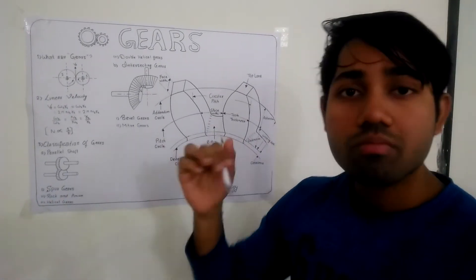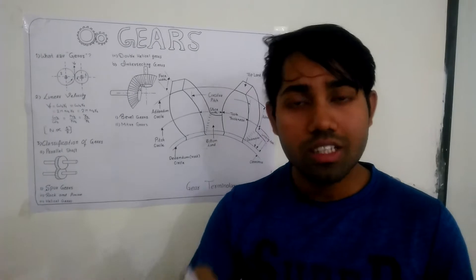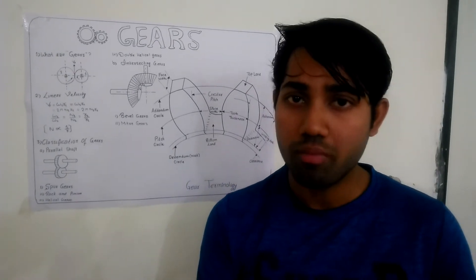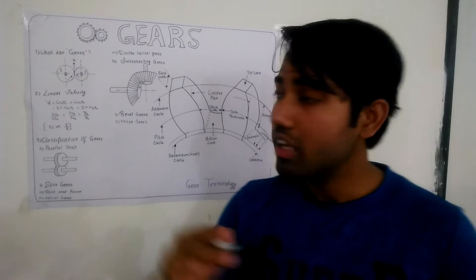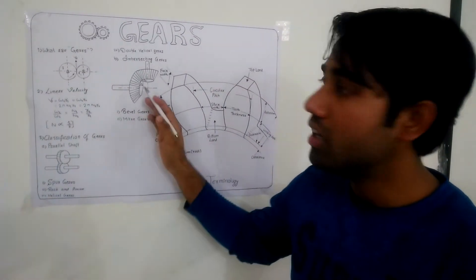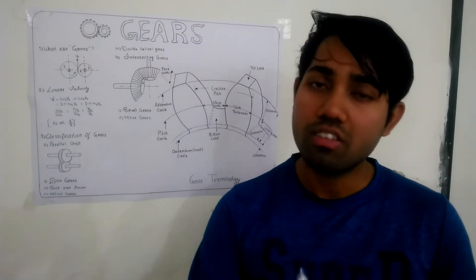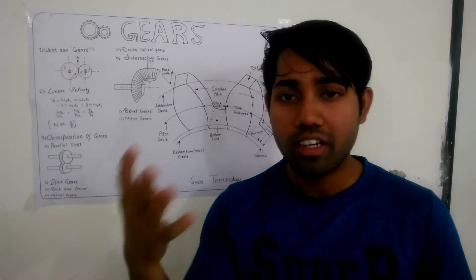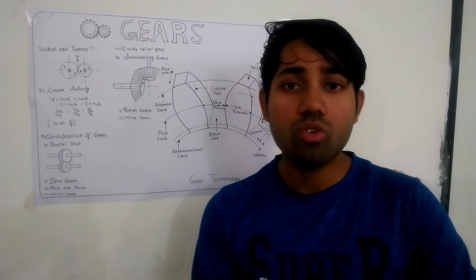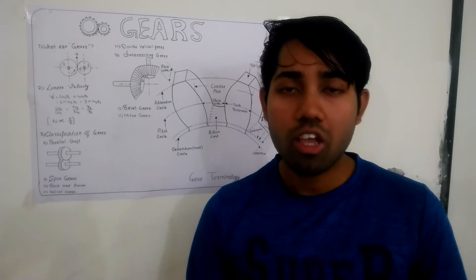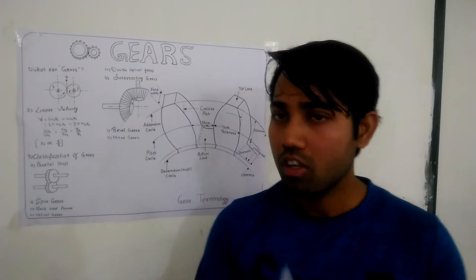In helical bevel gear, teeth are helical, that is curved in shape. The advantage is the same as helical spur gear: at the time of engagement of the helical bevel gear, there is no sudden application of load, because contact occurs at the point of the leading edges of the curved gear.